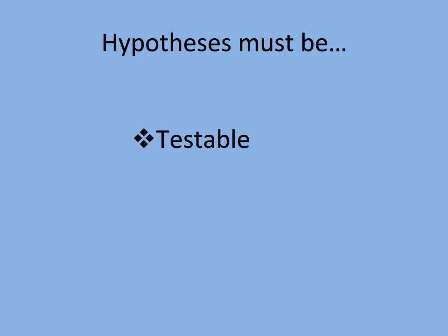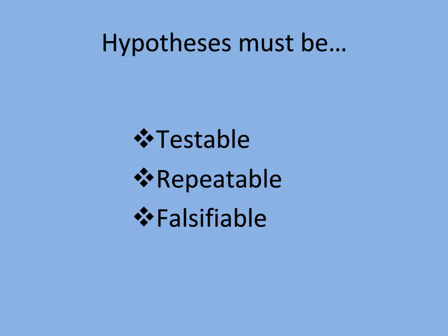A good hypothesis must be testable, meaning you can test it. Can we test something like that? No — we have to be more specific. A good hypothesis must also be repeatable, meaning you need to be able to test the hypothesis many times, and other researchers must be able to test your hypothesis as well. And a good hypothesis must be falsifiable — this means you have to have the ability to prove your hypothesis to be false.